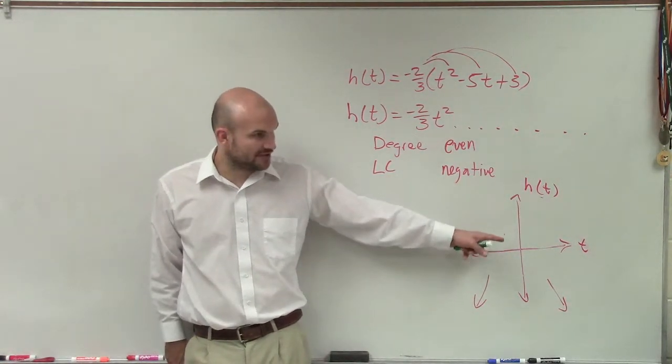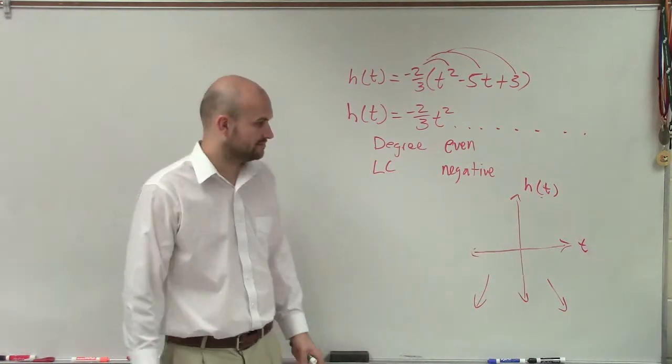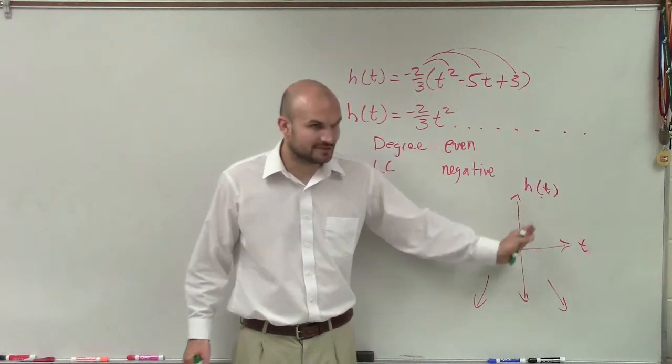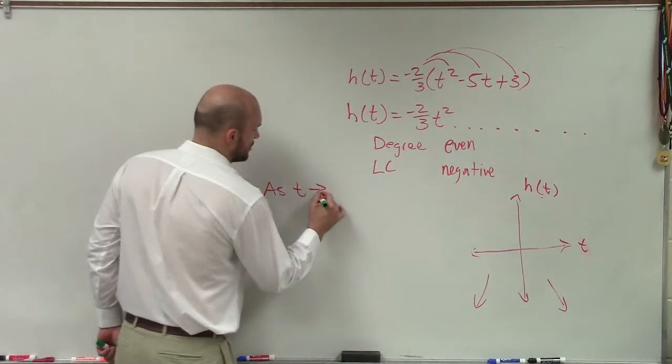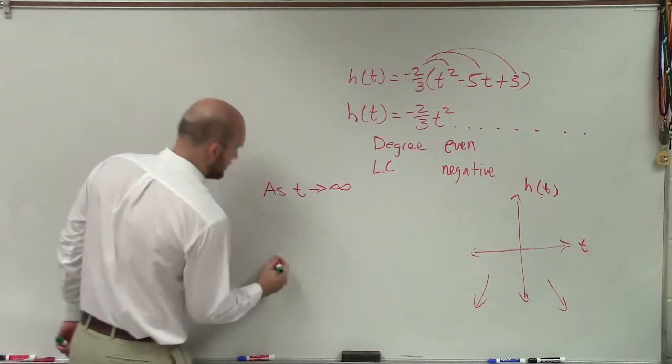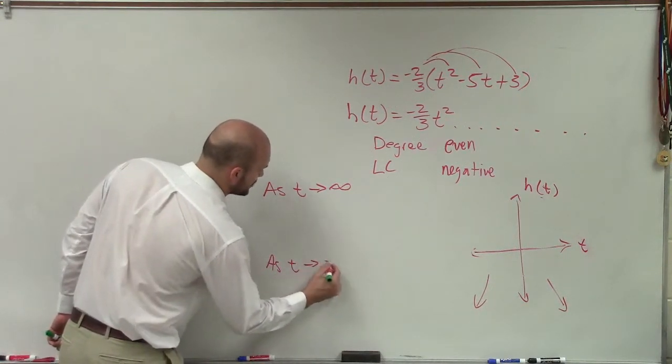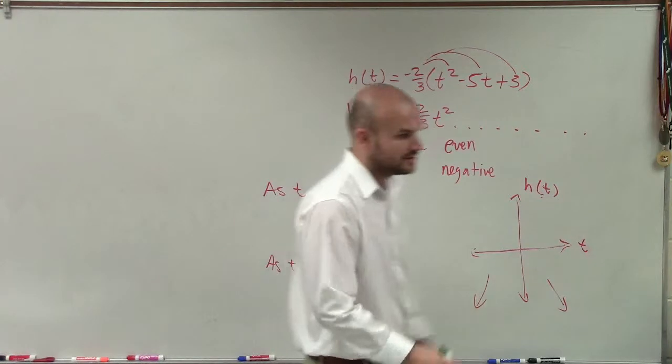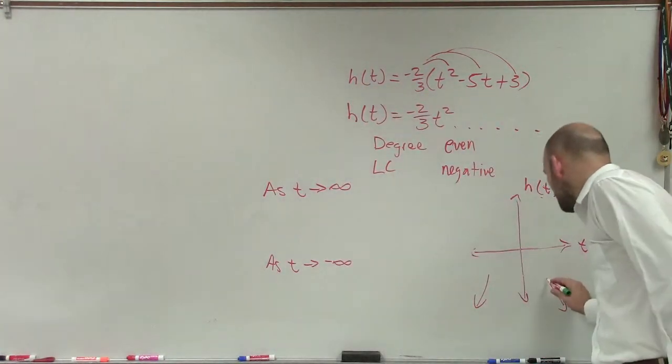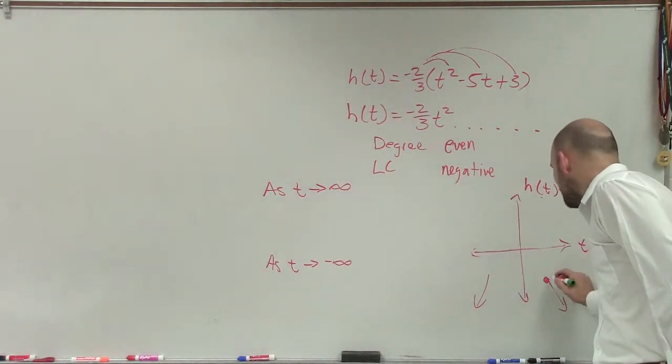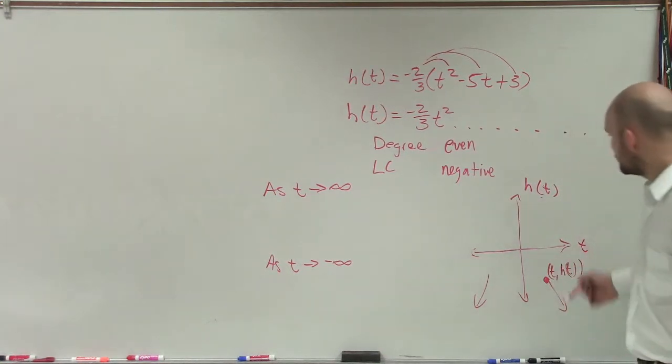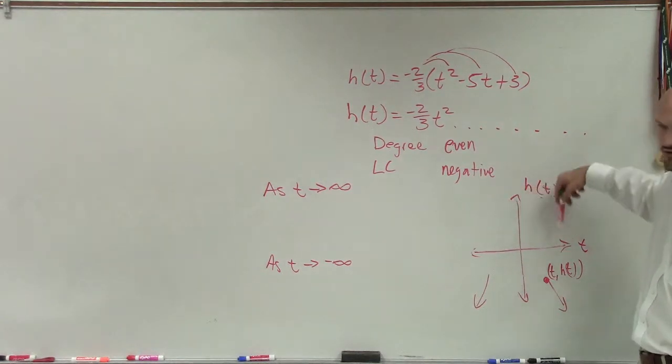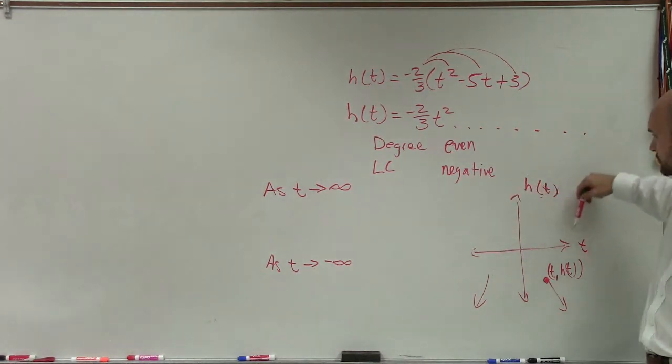Now, the t values only go left and right. So t can go to the right or it can go to the left. So we say as t approaches infinity and as t approaches negative infinity. So what does it look like? First of all, we have a point here. And remember, each coordinate point will be t comma h(t). So as my points go towards infinity, meaning they go to the right, as my points go towards infinity, where is the graph going, up or down?